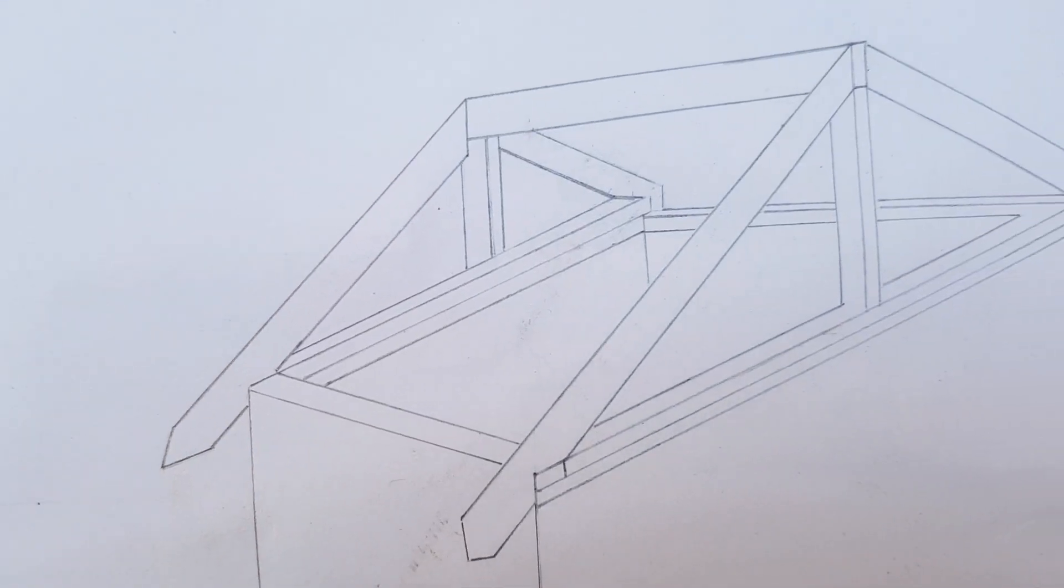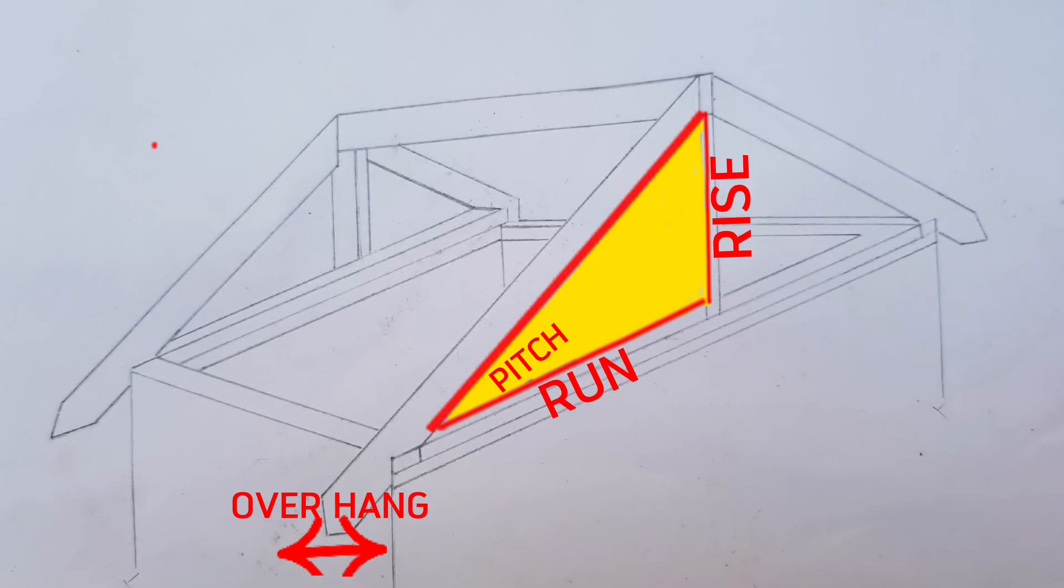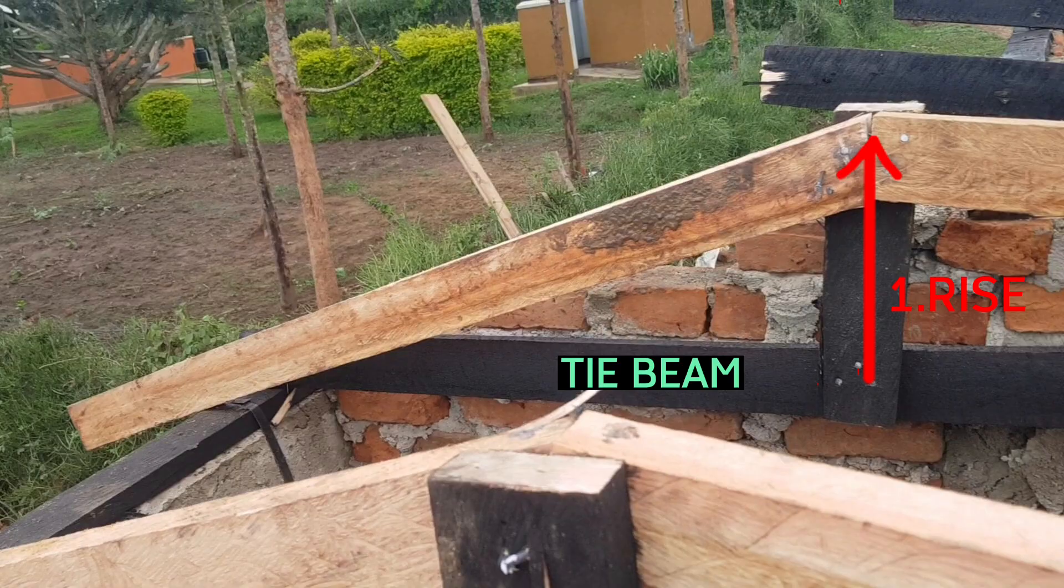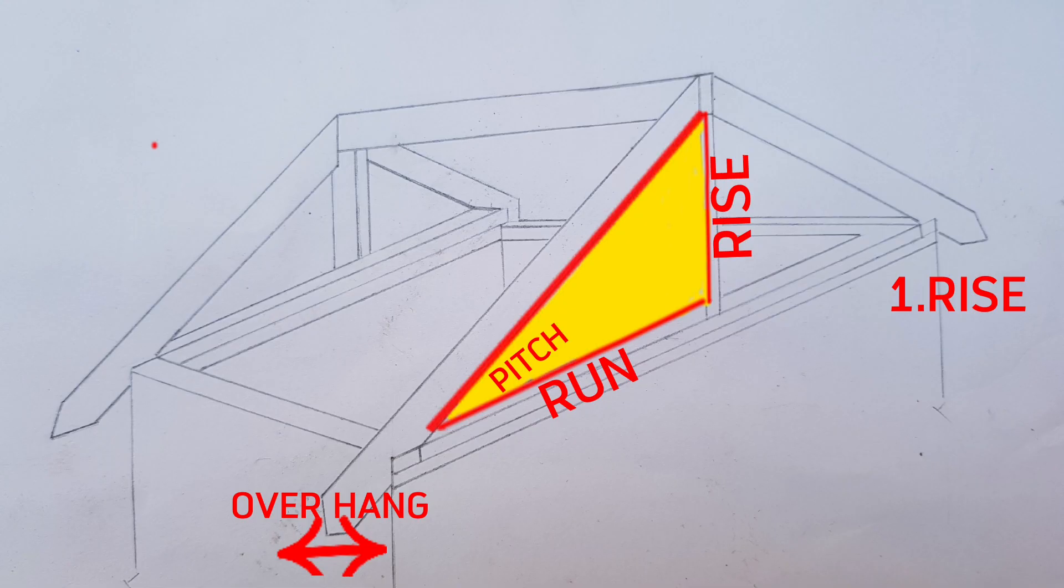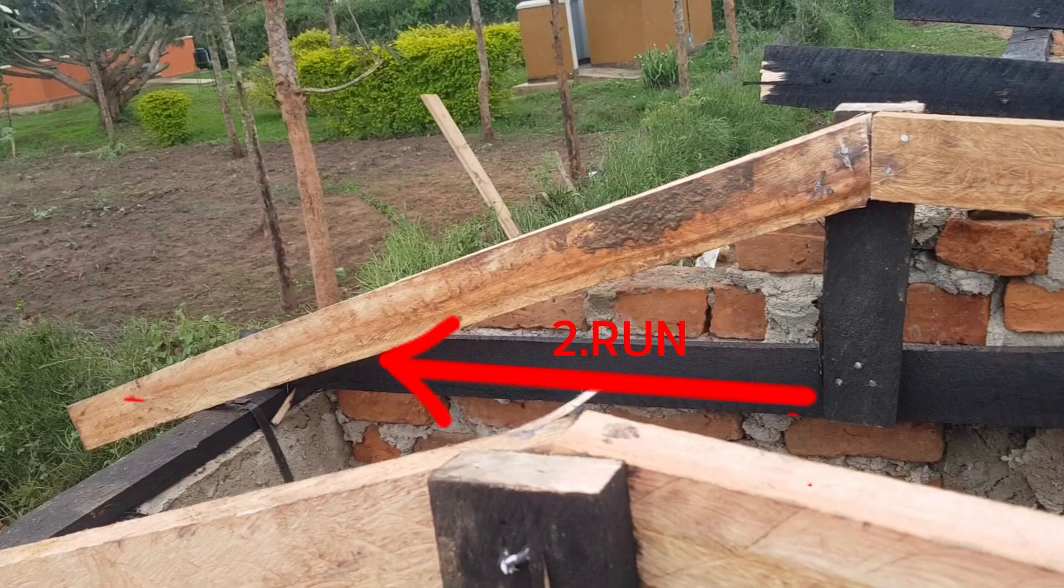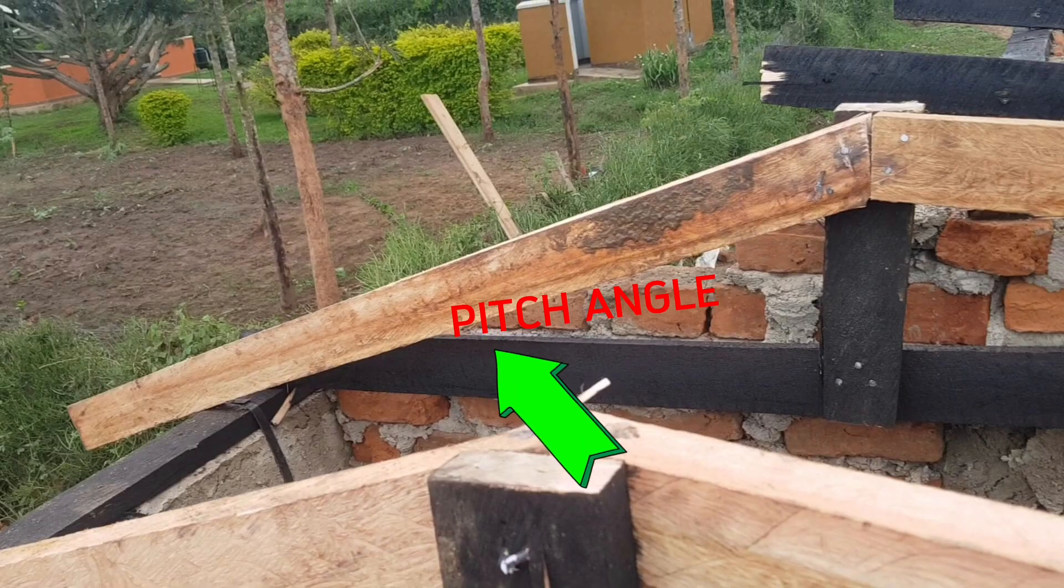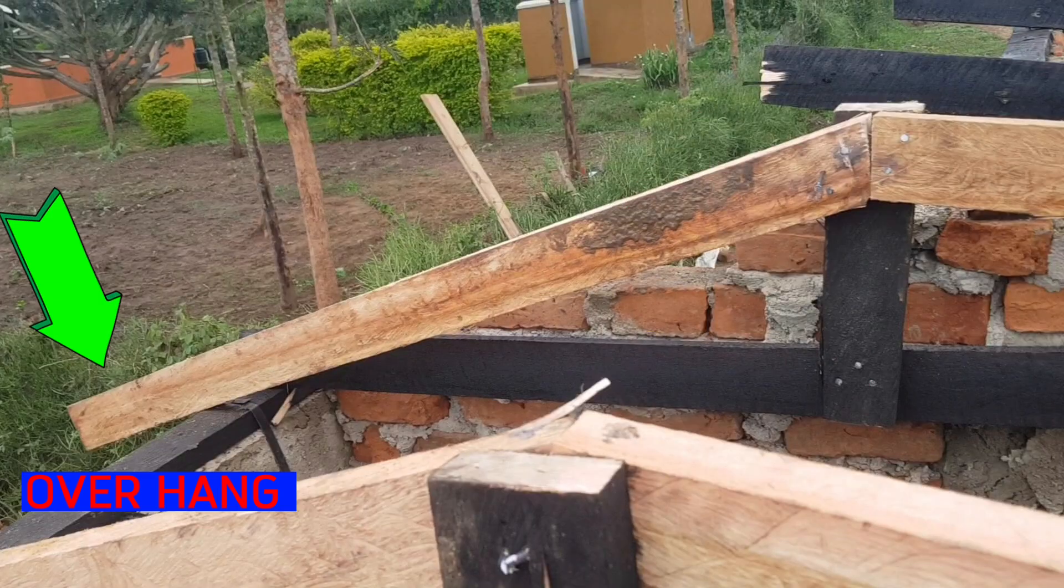Before you learn how to calculate roof rafter length, make sure to understand these four common roofing terms. One: the rise, which is the vertical height of the roof from the tie beam to the top of the roof. Two: the run, which is the horizontal length from one side of the roof to the center of the house. Three: the pitch, which is the slope of your roof, measured in degrees. Four: the overhang, that is the section of the rafter that extends past your wall plate.